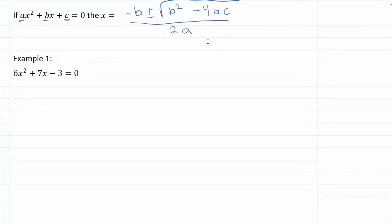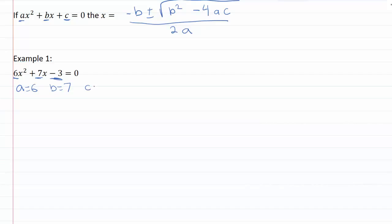Example one is 6x² + 7x − 3 = 0. First we need to figure out what our coefficients are. We've got 6 right here — that will be our a. We've got a 7 right here — that will be our b. And right here I've got a negative 3, so c is going to be negative 3.